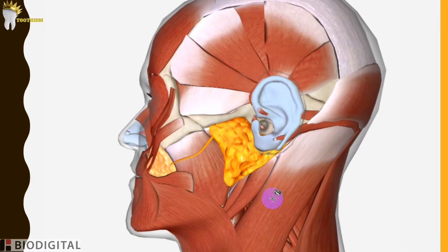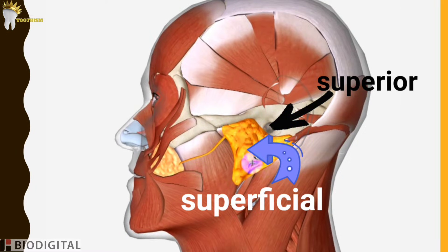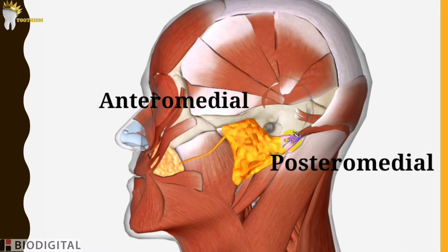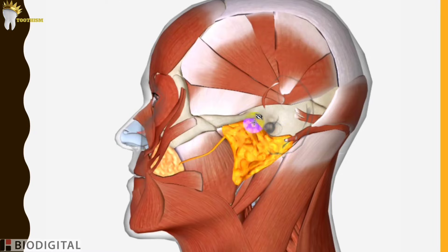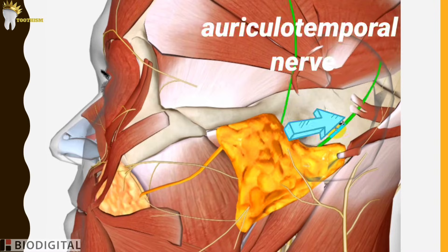Now let's look at the surfaces of this gland. It has a superior surface, superficial surface, anteromedial surface, and posteromedial surface. The superior surface is concave, and is related to the external acoustic meatus and the posterior aspect of the temporomandibular joint. The auriculotemporal nerve is embedded in the capsule of the gland.